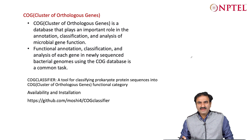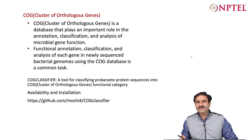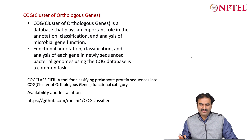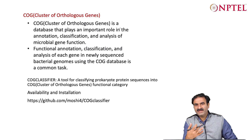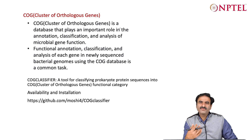One of the earliest databases for organizing genes into functional categories was the COG database — Clusters of Orthologous Genes — which was available at NCBI. It classified genes into different functional categories based on their orthology.